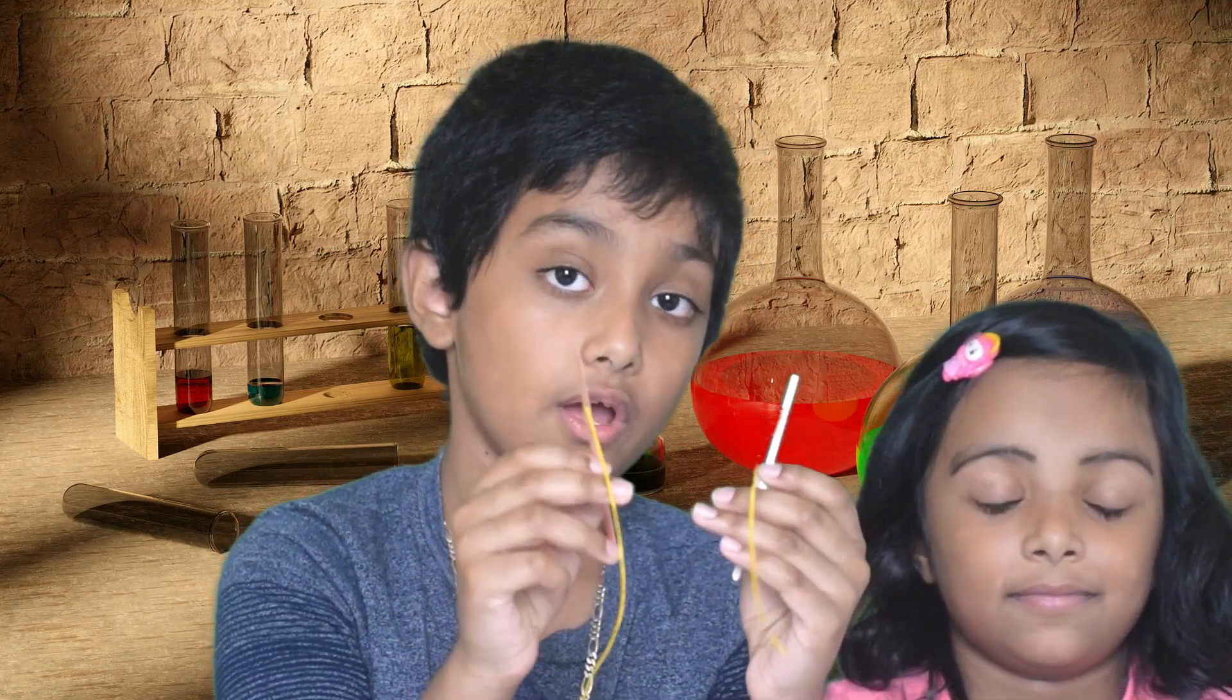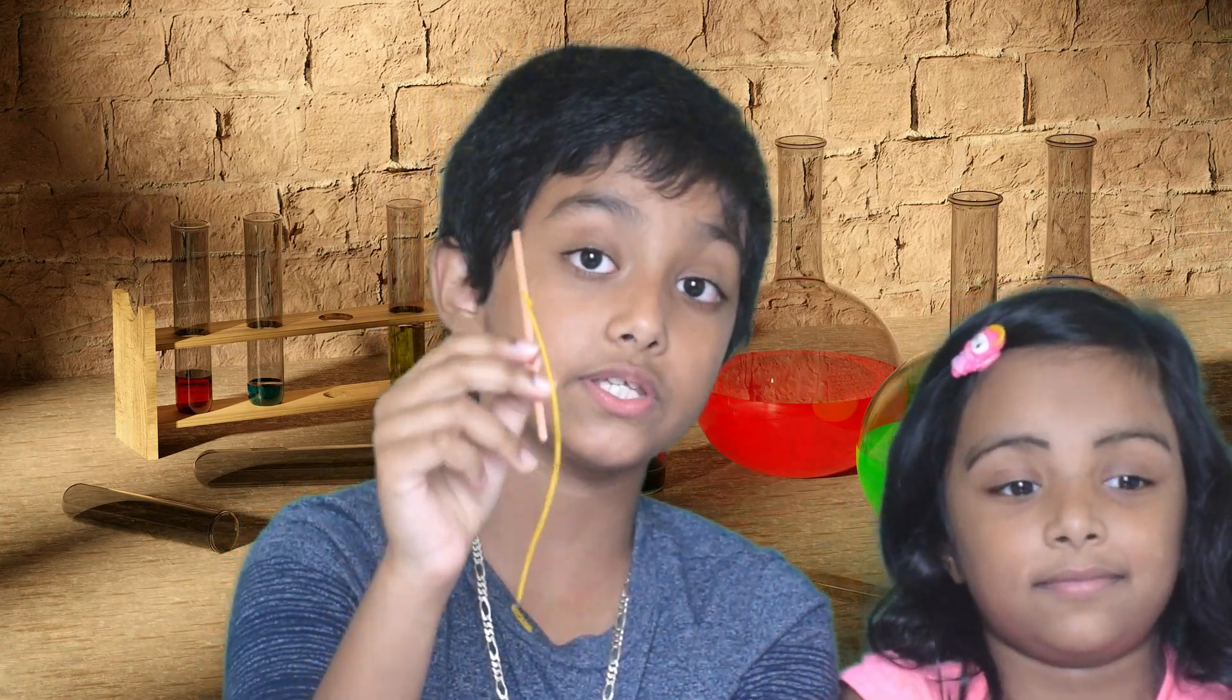This process of making electricity is called electrolysis. For this we need three components: one electrolyte, which is in my sister's hand, and two electrodes, out of which one has more desire for attracting the electrons from the other. This flow of electrons is called electricity.